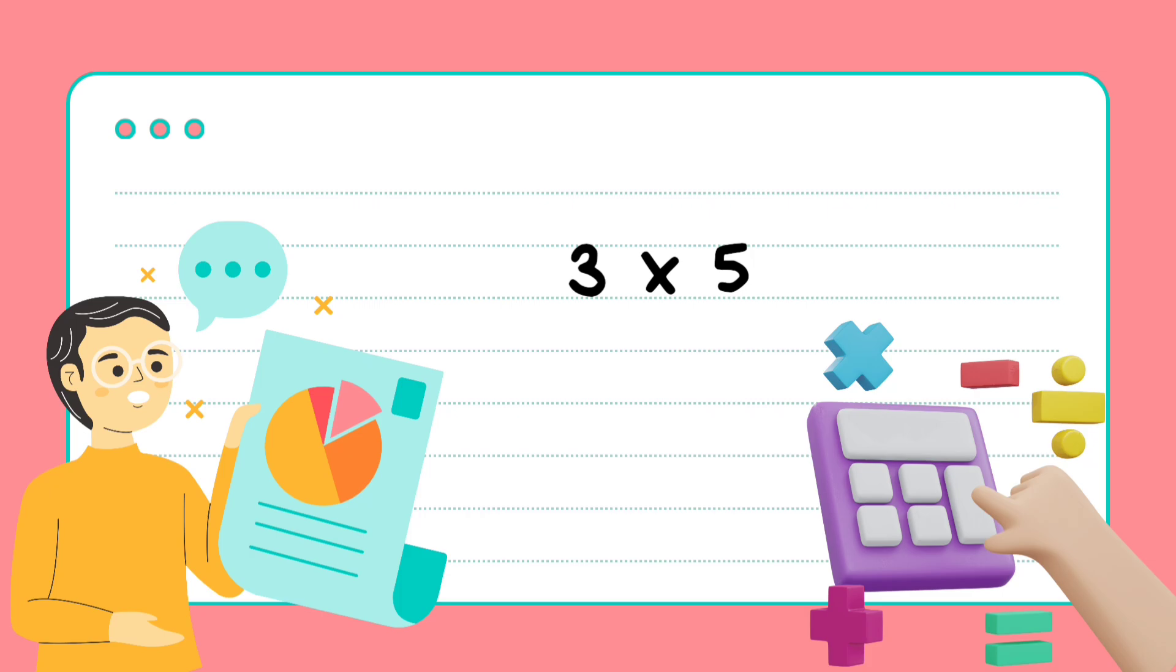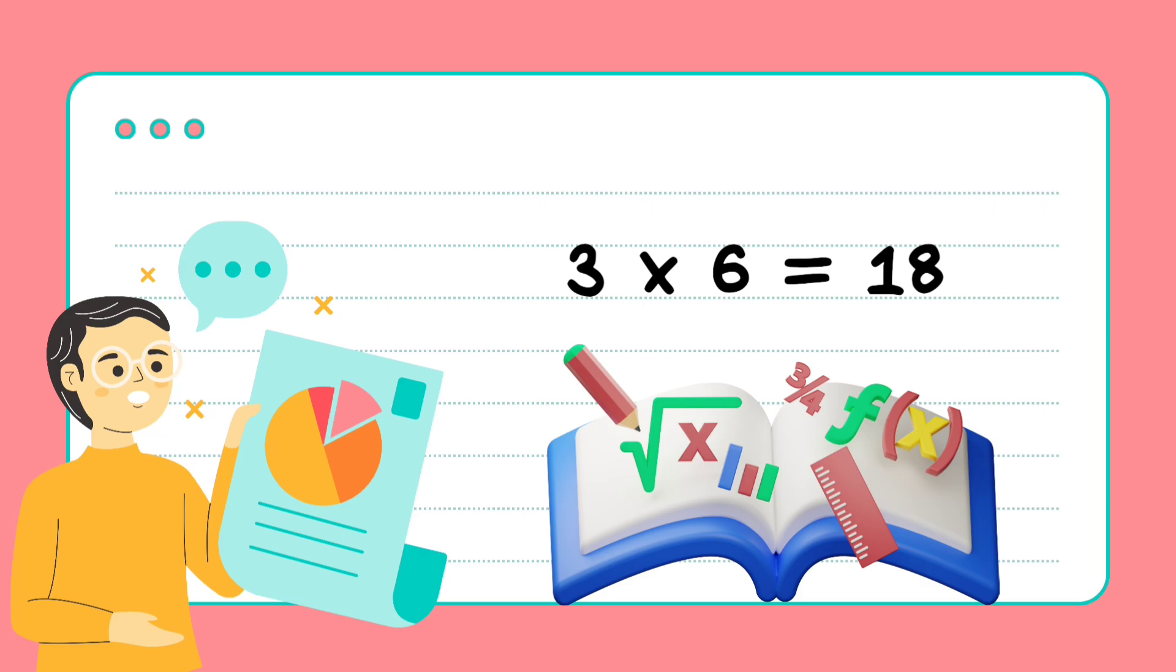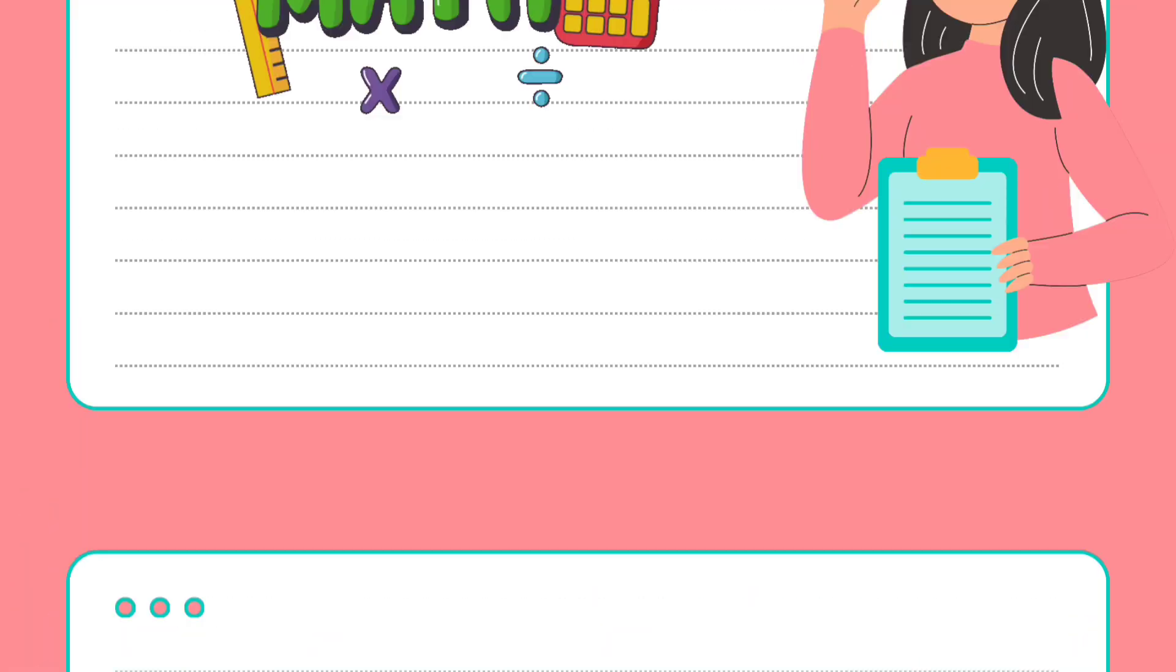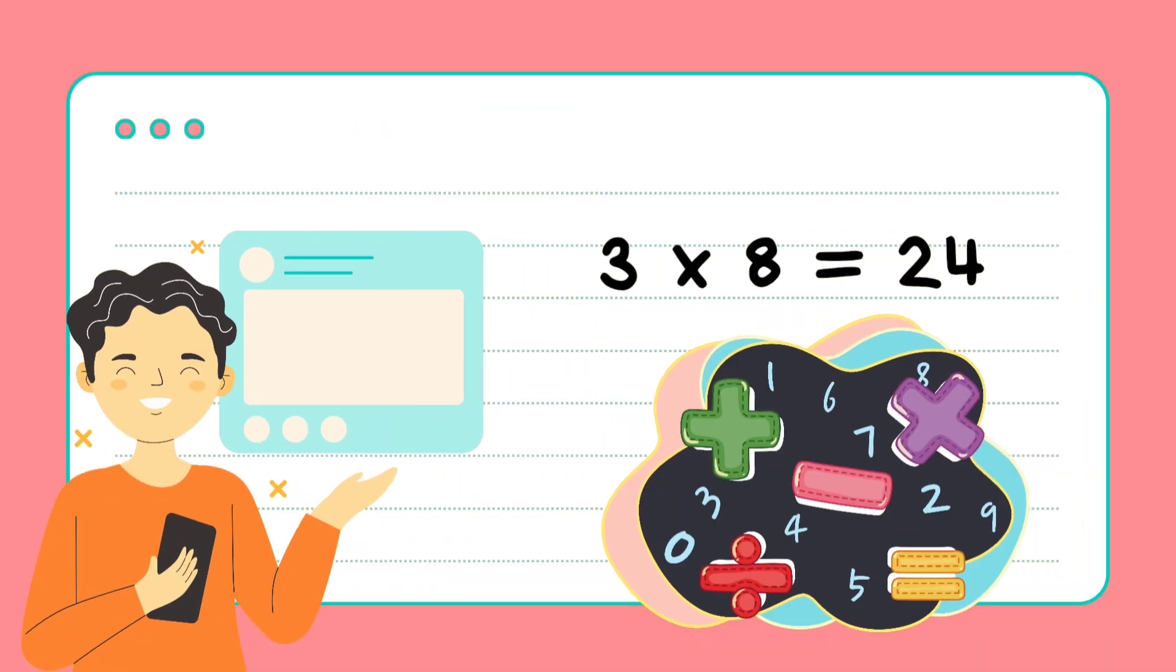3 times 5 is 15, great. 3 times 6 is 18, straight, straight. 3 times 7 is 21, 2, 1. 3 times 8 is 24, well done.